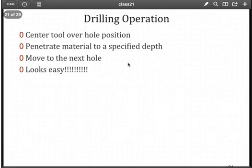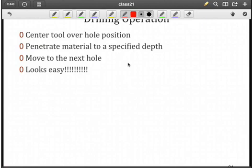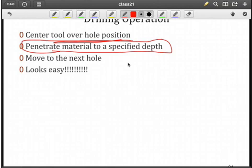Let's look at a simple drilling operation. Here we're going to center the tool over the hole position that we want to create. That would involve a move to that location. Then we're going to move into the material to a specified depth, if it's a through hole or a blind hole. And then we're going to have to retract the tool and then move to the next hole. That sounds like a very simple operation. And how would we go about thinking about that in terms of path planning?